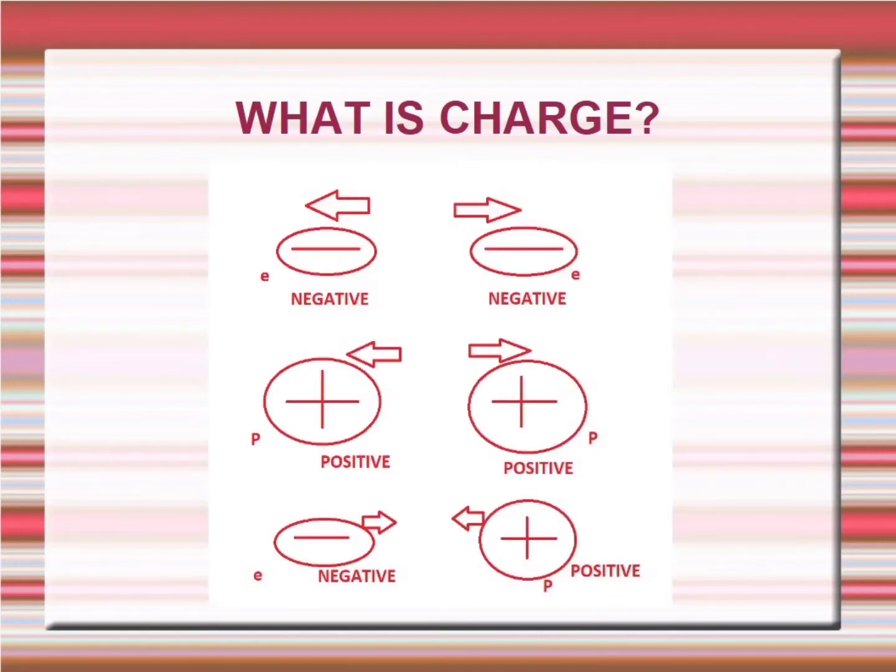Negative repels the negative, means electron repels the electron. Also positive repels positive, means proton repels the proton. Two negatives move in opposite directions. Similarly, two positives move in opposite directions.